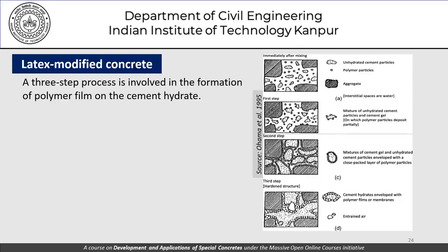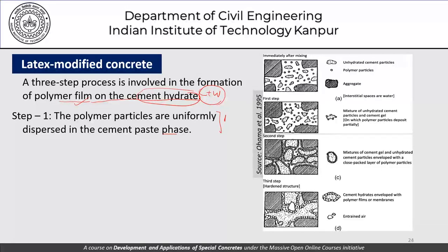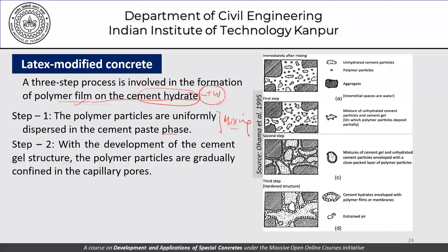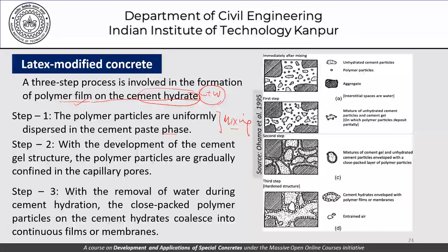A three-step process is involved in the formation of polymer films on cement hydrates. Step one: polymer particles are uniformly dispersed in the cement paste phase during mixing. Step two: as the cement gel structure develops, the polymer particles are gradually confined in the capillary pores. Step three: with the removal of water during cement hydration, the closely packed polymer particles in the cement hydrates coalesce into a continuous film or membrane.